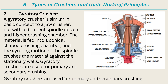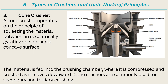2. Gyratory Crusher. A gyratory crusher is similar in basic concept to a jaw crusher, but with a different spindle design and higher crushing chamber. The material is fed into a conical-shaped crushing chamber, and the gyrating motion of the spindle crushes the material against the stationary walls. Gyratory crushers are used for primary and secondary crushing. 3. Cone Crusher. A cone crusher operates on the principle of squeezing the material between an eccentrically gyrating spindle and a concave surface. The material is fed into the crushing chamber, where it is compressed and crushed as it moves downward. Cone crushers are commonly used for secondary and tertiary crushing.